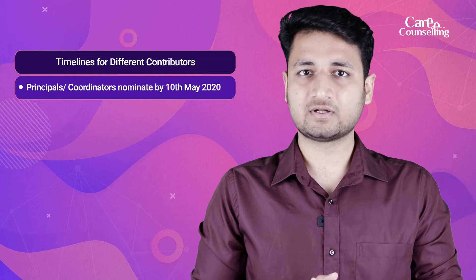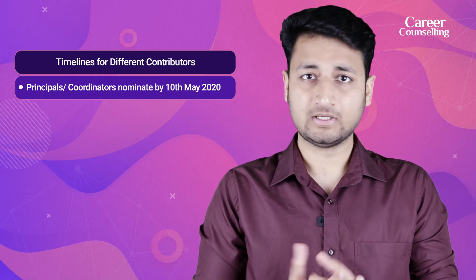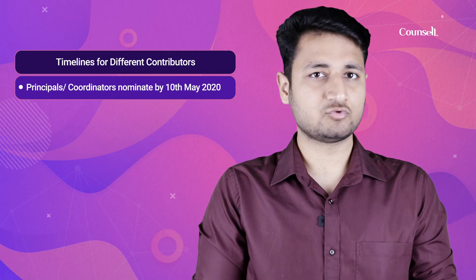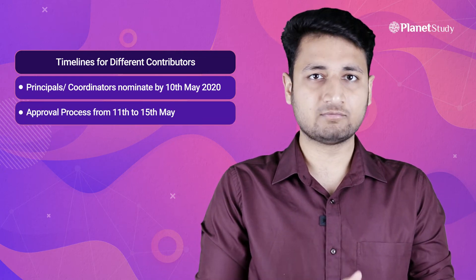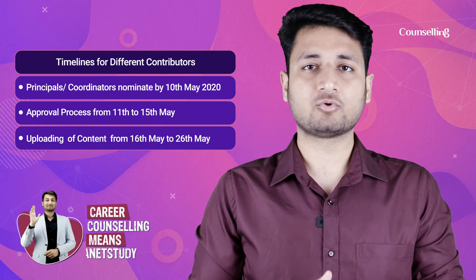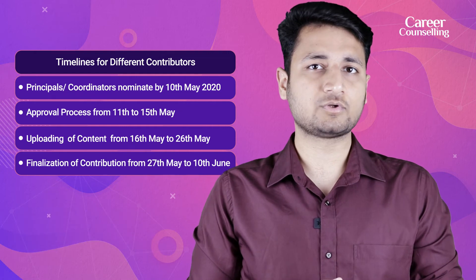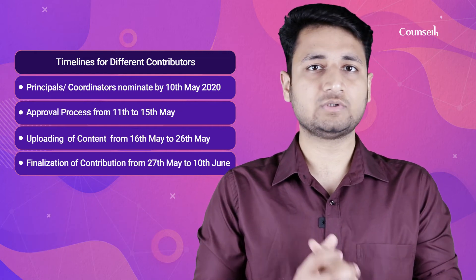School coordinators and principals who want to nominate their institute should do so by 10th May 2020. After nomination, it goes for approval between 11th May and 15th May. Those whose nominations are approved must upload content from 16th May to 26th May. Finalization of contributor content will be done from 27th May to 10th June. An annexure for content creation is also available on the Vidyadhan website, which all contributors must read before nomination.